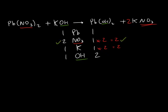Now the NO3s are in balance, but potassium is no longer in balance now that we've doubled the potassium on the right. We'll have to go back to the left and modify the potassium. On the left, potassium is located here, so we'll place a 2 in front of that to double the potassium. But as we double the potassium, we are also doubling the hydroxide as well. So now notice the potassium is in balance — we have two potassiums on the left and two on the right. And the hydroxides are now also two on the left, two on the right, meaning they're in balance as well. The only thing we haven't checked is lead, but lead is already okay because we have one on the left and one on the right.